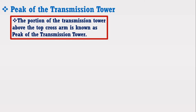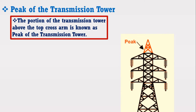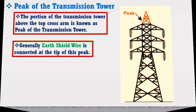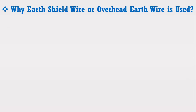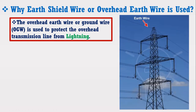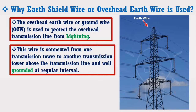Now I am going to discuss about the peak of the transmission tower. It may be defined as the portion of the transmission tower above the top cross arm. The earth shield wire is connected at the tip of this peak. The overhead earth wire or ground wire is used to protect the overhead transmission line from lightning. Consider the figure in which the arrow shows the earth shield wire connected at the tip of the peak. This wire is connected from one transmission tower to another above the transmission line and is well grounded at regular intervals.